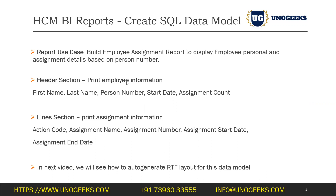In the employee header section, we want to pull the first name, last name, person number, and start date. Apart from these columns from the database tables, we'll also have an aggregate column to display the number of assignments the employee has worked on so far. This aggregate column won't be directly in the database, but we'll add it to count the assignments on the parent query — just to show how aggregate queries work in a BIP data model. In the line section, we'll print assignment information: assignment name, number, start date, end date, and action code.